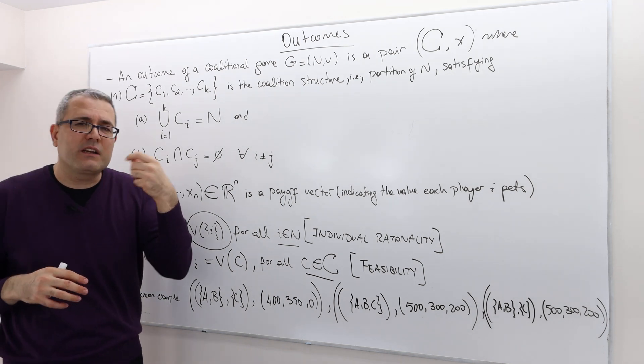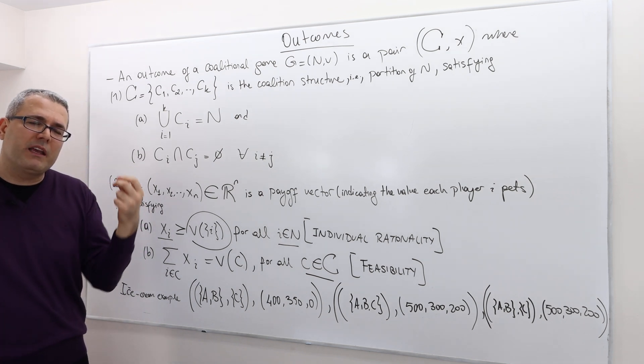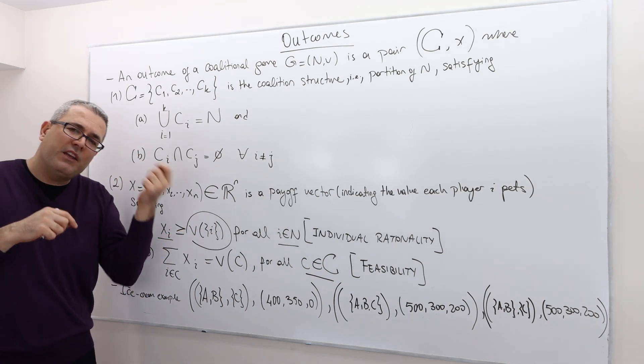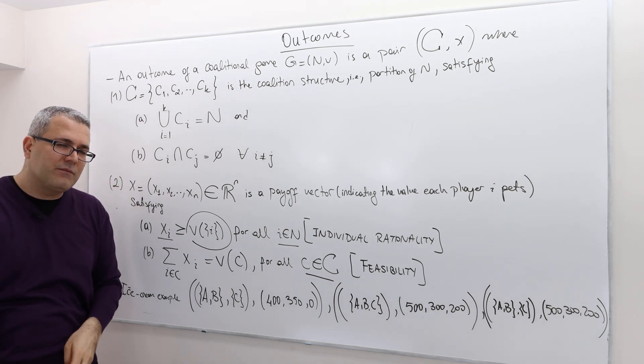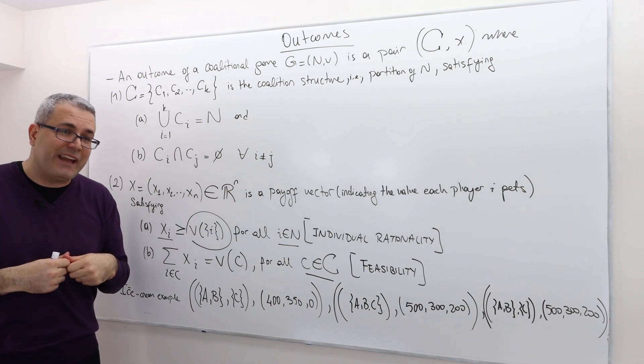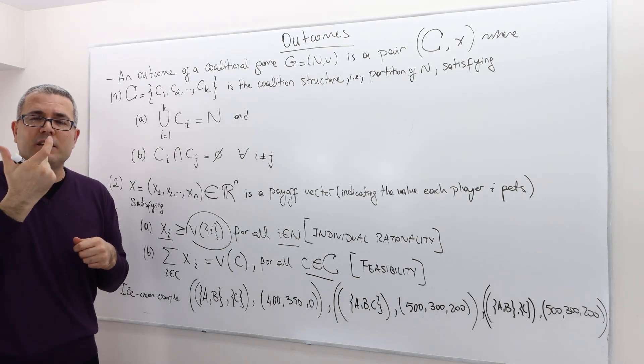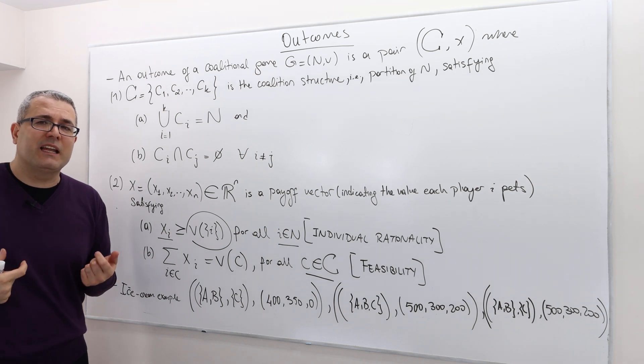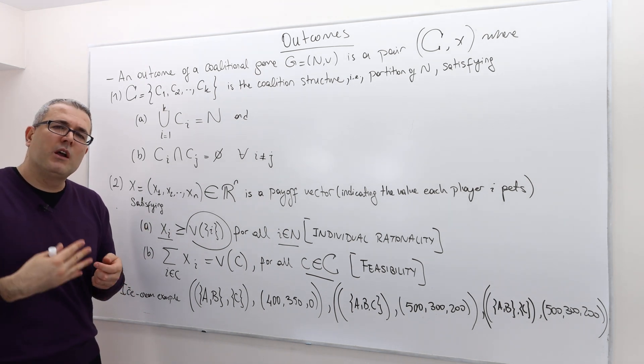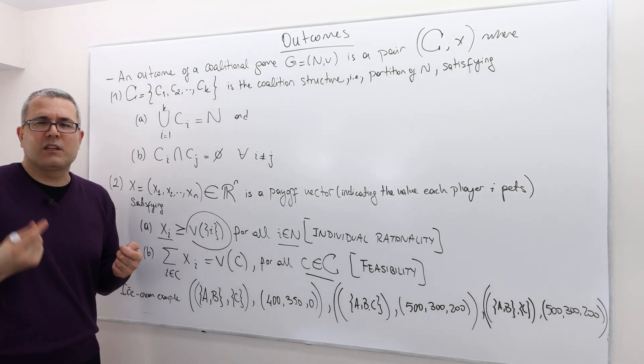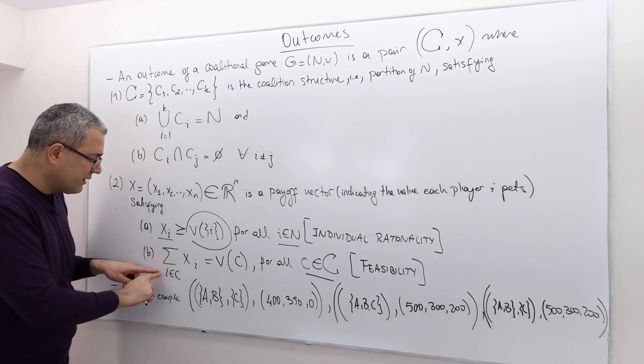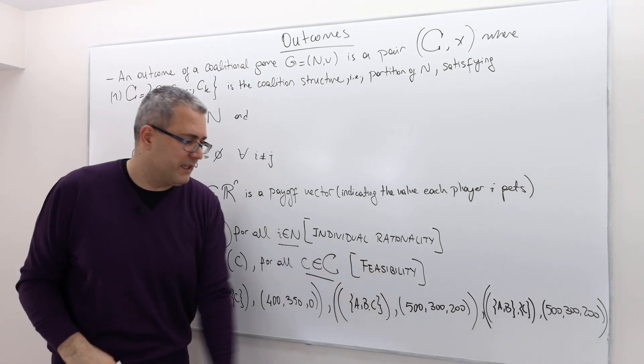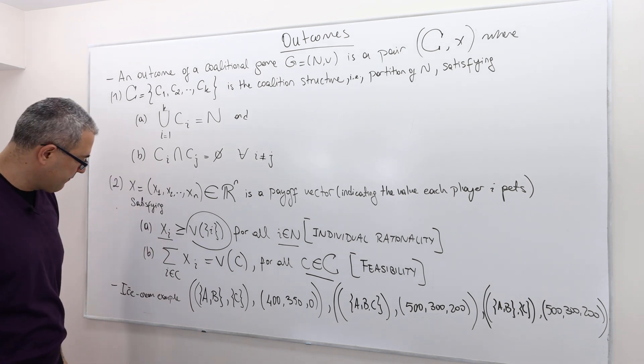So think of it this way. If player A and B are forming a coalition and buying some ice cream and distributing it among themselves, the total amount of ice cream agent A and agent B are getting cannot exceed the value of the coalition A, B, which is 750 grams. And it shouldn't be less than because, well, that's kind of an assumption. Remember, the more ice cream is always better. So it's like, why are you wasting this ice cream? So therefore, the summation of XI must be exactly equal to the worth of the coalition. So we call this feasibility. And this has to be true for any coalition.